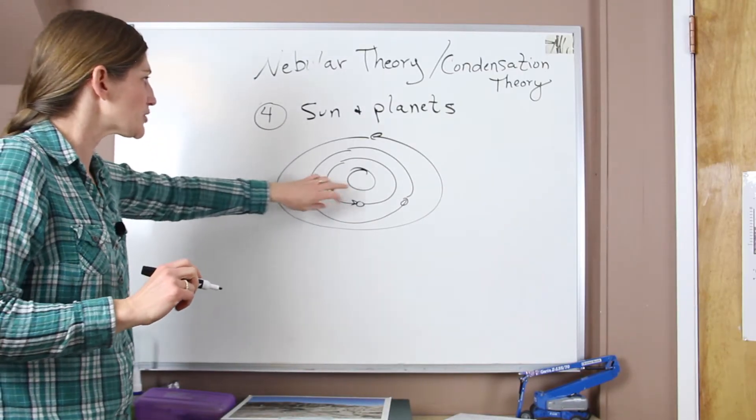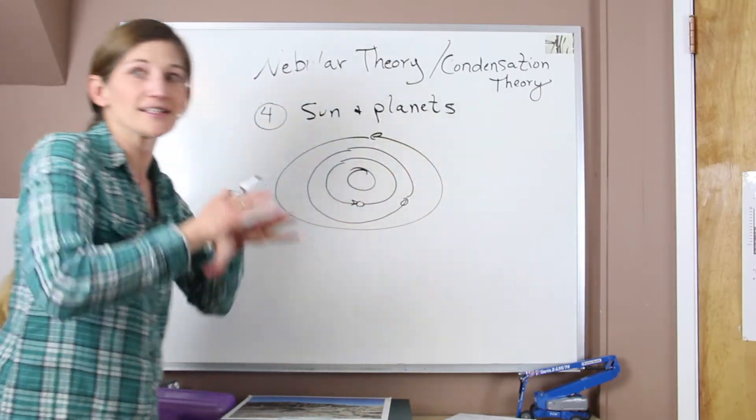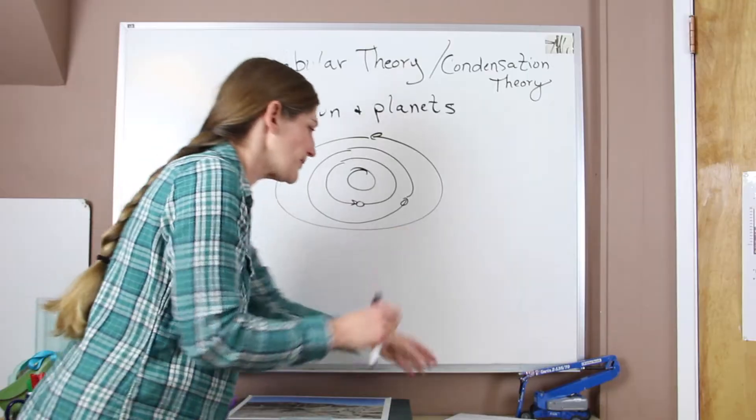So in the inner planets, we have our terrestrial or our rocky planets. We have our bigger gas giants as we move out away from the sun.